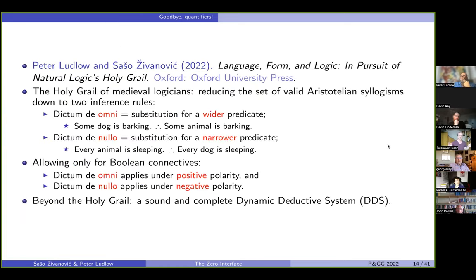So this is a long and winding road, actually, that takes half of the book, or possibly even more. So how do we start? In our book, we actually start from the perspective of natural logic. So there is this thing that we call the holy grail of medieval logicians. And that's to reduce the set of valid Aristotelian syllogisms down to two inference rules. So substitution for a wider or a narrower predicate. And well, medieval logicians couldn't really work this out totally. But these days, using modern tools, it's very easy to see that if we only allow for Boolean connectives negation, conjunction, disjunction, then dictum de omni will only apply under positive and dictum de nullo will only apply under negative polarity.